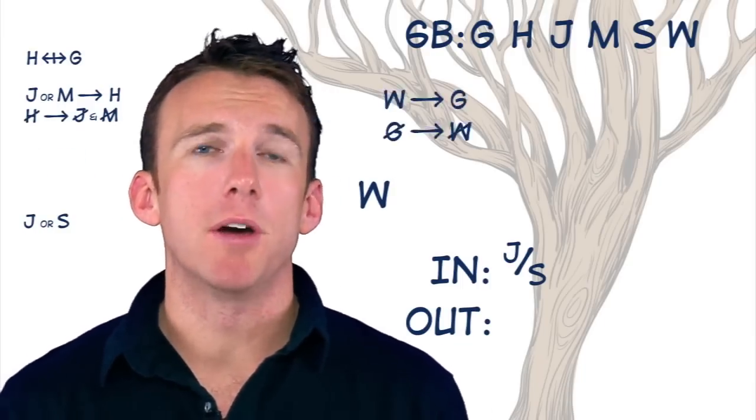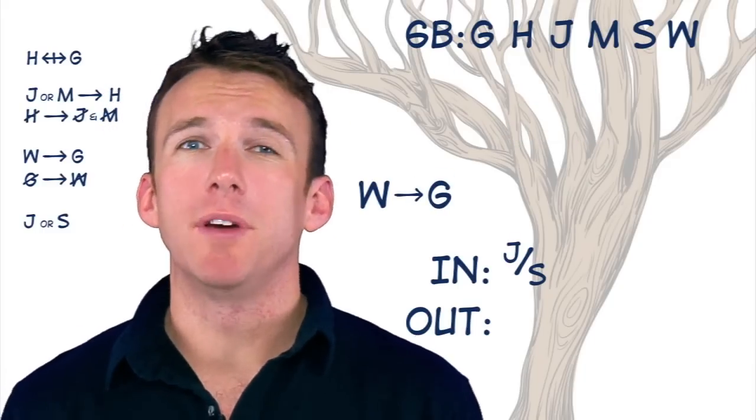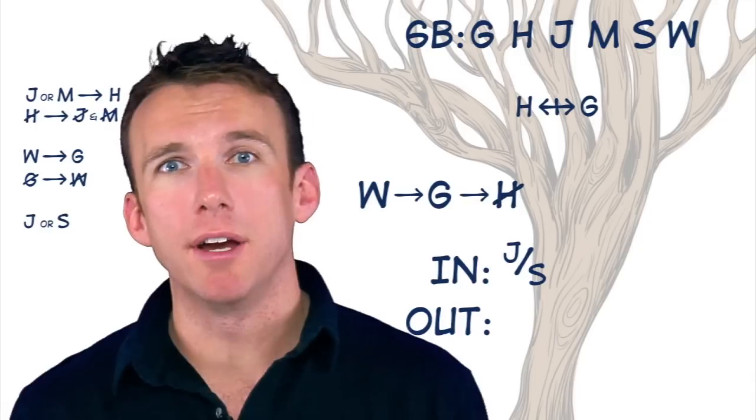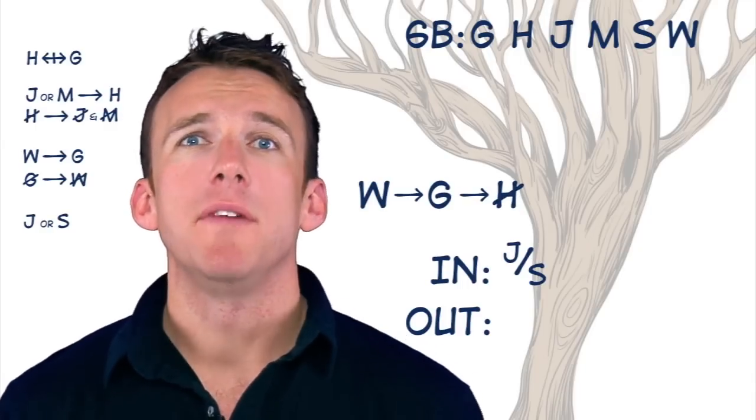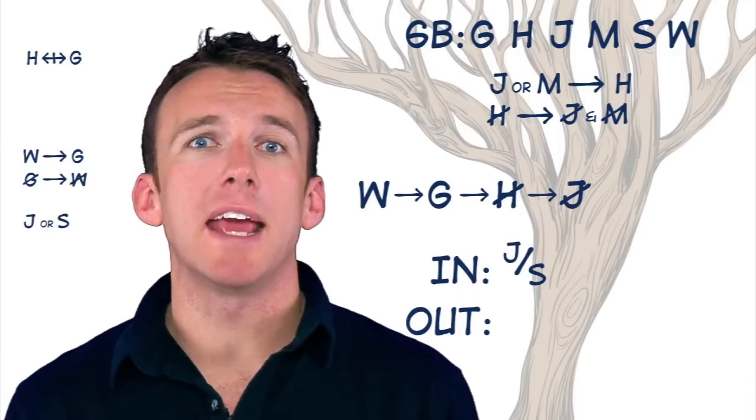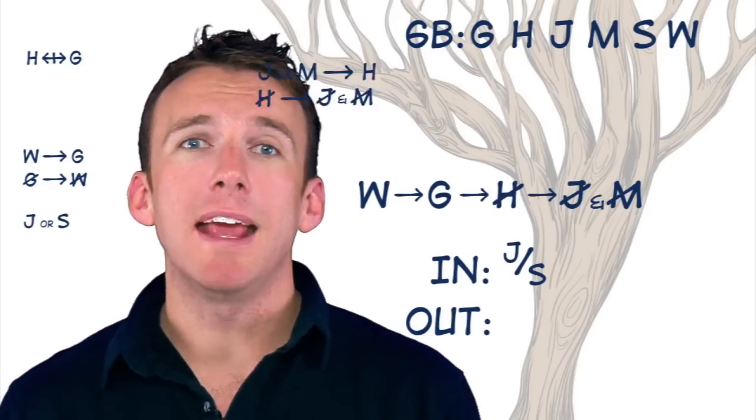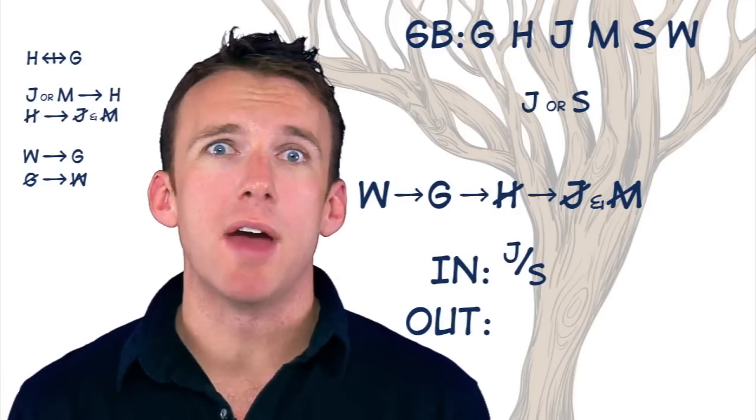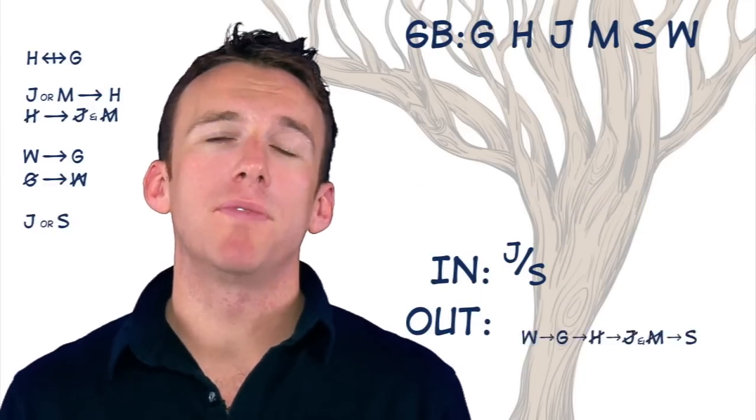If we have Wrens, well then we know we have to have Growspeaks, and we know that if we have Growspeaks, you can't have Harriers, and don't stop there. If you don't have Harriers, then we don't get Js and we don't get Martins. And if you don't have Js, you have to have Shrikes. So all of that's going to be helpful.